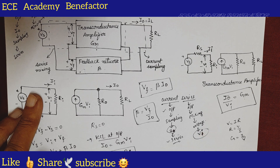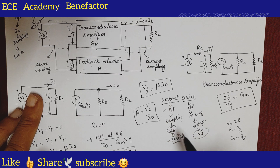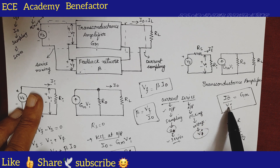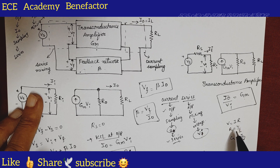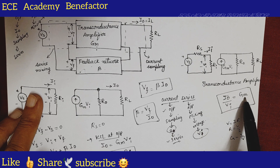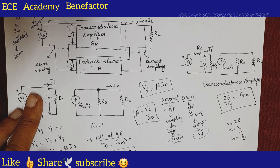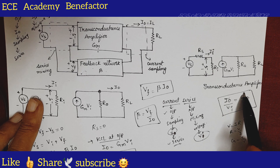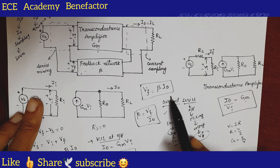We need to use a voltage source for series mixing. So output is I_naught and input is V_i. If you take the ratio of output by input, I_naught by V_i is gm — the transconductance. You know Ohm's law V = iR, so i/V is the reciprocal, known as transconductance gm. For a current series feedback amplifier, the basic amplifier to be used is a transconductance amplifier of gain gm.